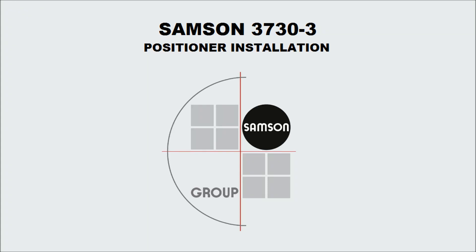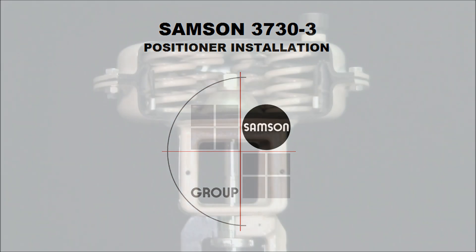In this how-to video, we'll install a Samson 3730 positioner to a 3277 actuator. Detailed step-by-step instructions can also be found by following the link in the video description below.